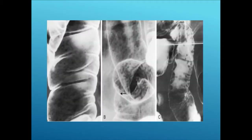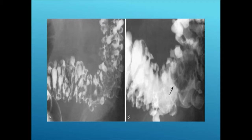Endoscopically, diverticuli appear as pockets in the colon. Radiographically, a normal barium x-ray shows a smooth colon contour with no diverticuli, while the classic finding is multiple pockets throughout the colon on barium x-ray.